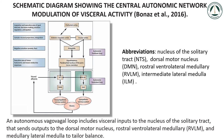Schematic diagram showing the central autonomic network modulation of visceral activity according to Bonaz et al. An autonomic vagovagal loop includes visceral inputs to the nucleus of the solitary tract, that sends outputs to the dorsal motor nucleus, to the rostral ventrolateral medullary, and to the intermediate lateral medulla, to adapt the balance between the sympathetic and parasympathetic activities to body constraints.